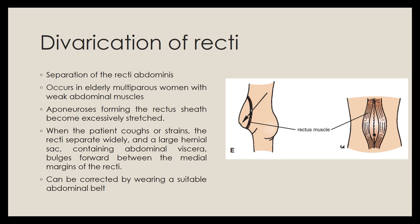Divarication of the recti means the two rectus abdominis muscles separate from each other. This usually occurs in elderly multiparous women who have had many pregnancies and have weak abdominal muscles due to stretching, causing the aponeurosis forming the rectus sheath to become excessively stretched. When the patient coughs or strains, the recti separate and a large hernia sac containing abdominal viscera bulges forward between the medial margins of the two recti.